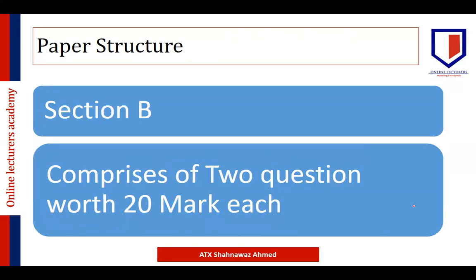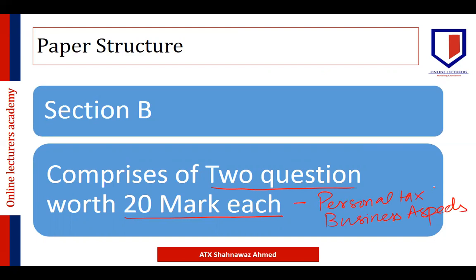Section B comprises two questions worth 20 marks each. Both questions will cover personal tax issues as well as business aspects of taxation. Usually one question is based on income tax and the other on corporation tax, with mixed elements of CGT and IHT. Whether you are appearing in a paper-based or computer-based exam, the format of the exam will remain the same.